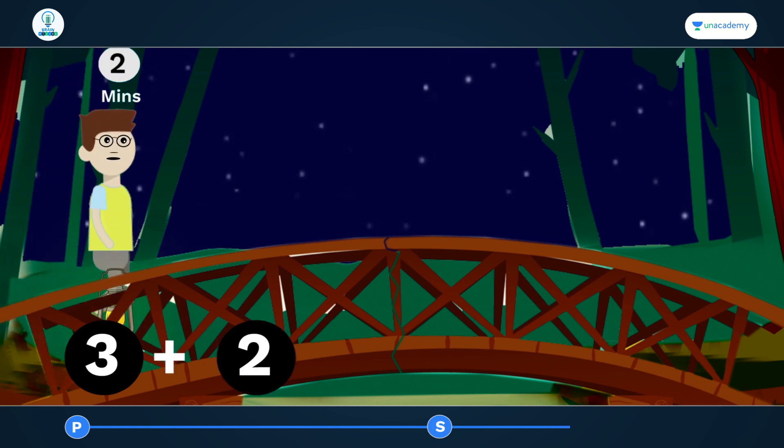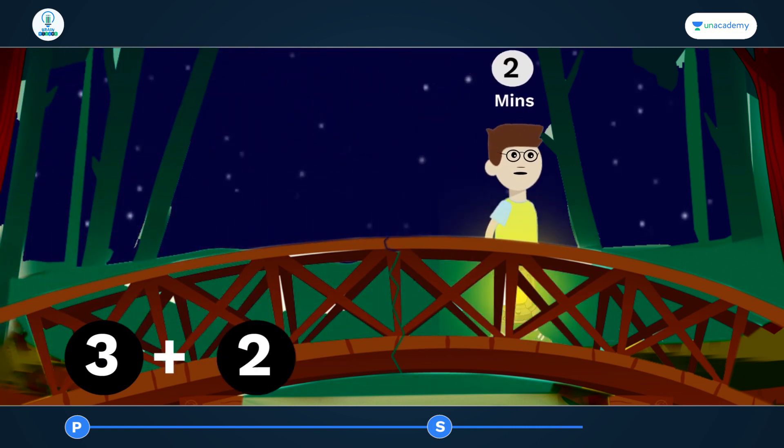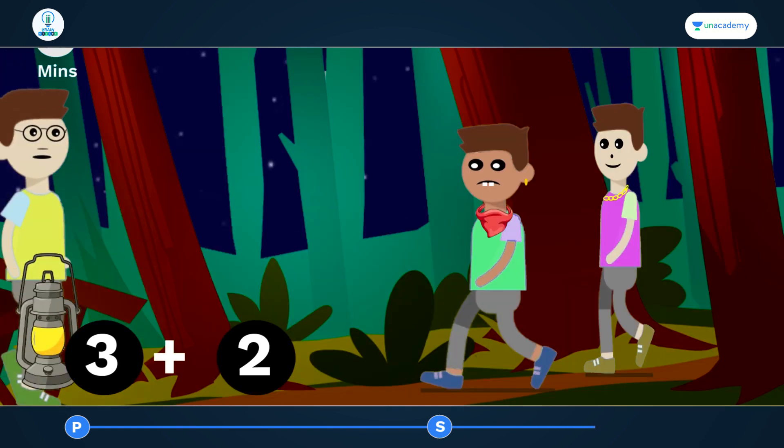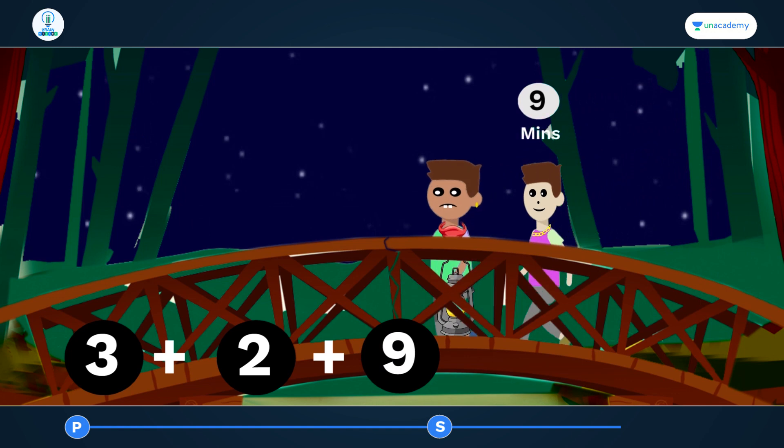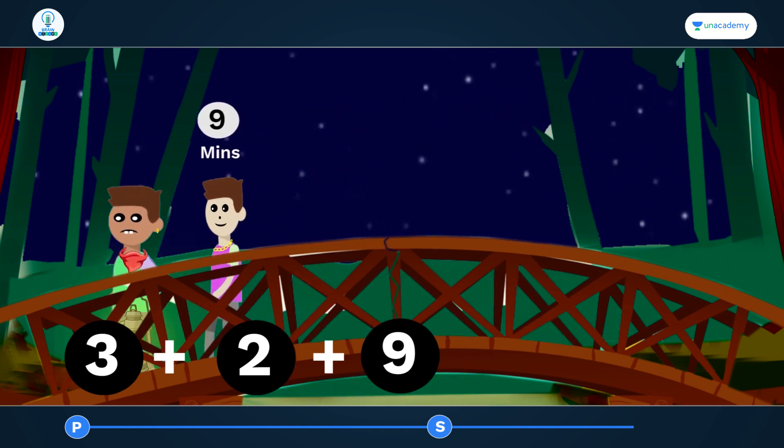Then, Akash will come back with the lamp. Now, he will hand over the lamp to Praveen and Rohit and they will go together. This will take 9 minutes as Rohit is the slowest between the two, and he takes 9 minutes.